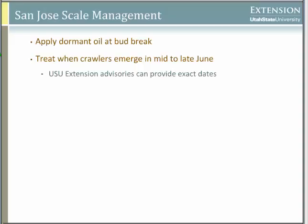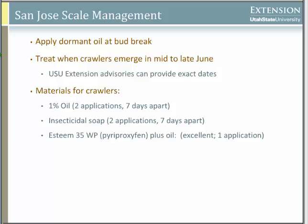To deal with San Jose scale, applying dormant oil around bud break helps but won't take care of all of them because their body is so impenetrable. A second treatment targeting the crawlers is necessary — we can provide dates for optimal treatment time. Oil at 1% or insecticidal soap are two options but may require two applications. Esteem, an insect growth regulator used with oil, requires just one application and is excellent. If the tree is really infested, it would require at least two years of this treatment cycle.